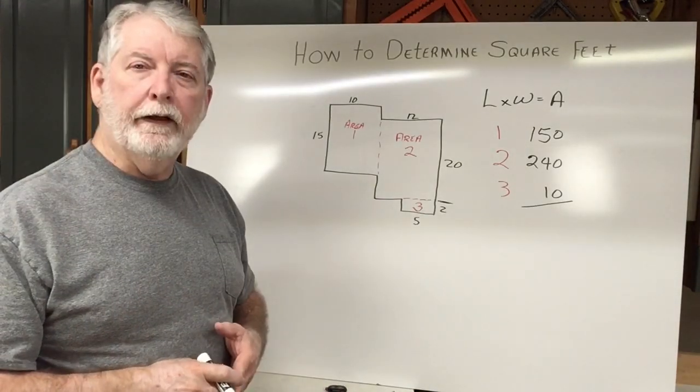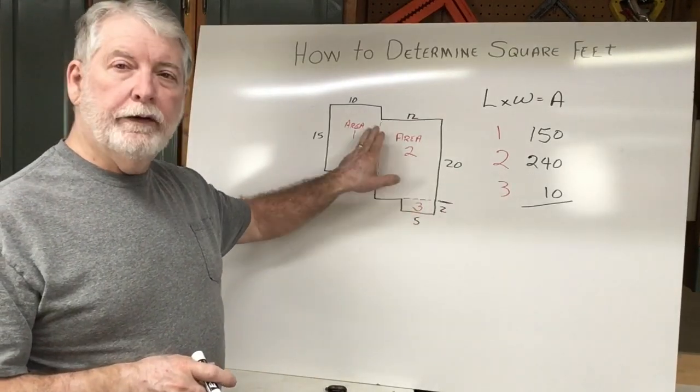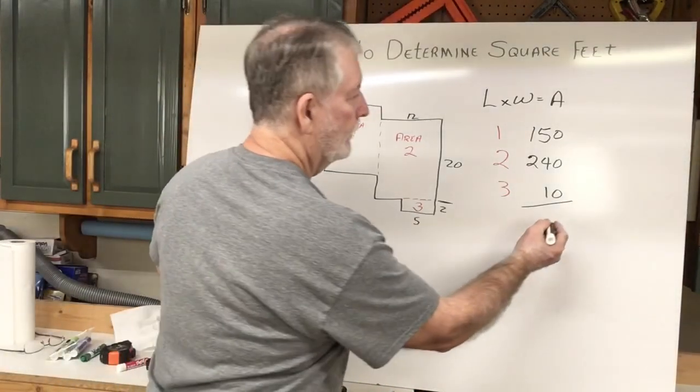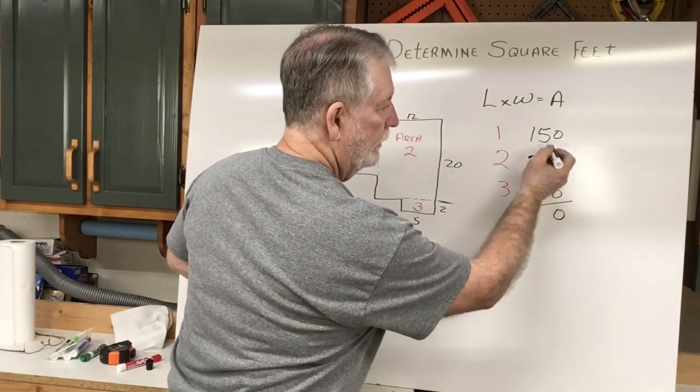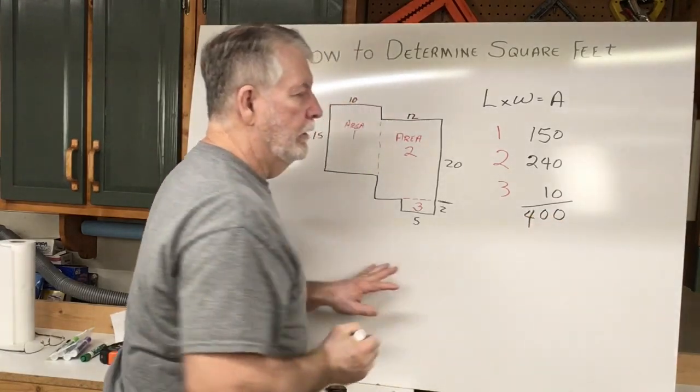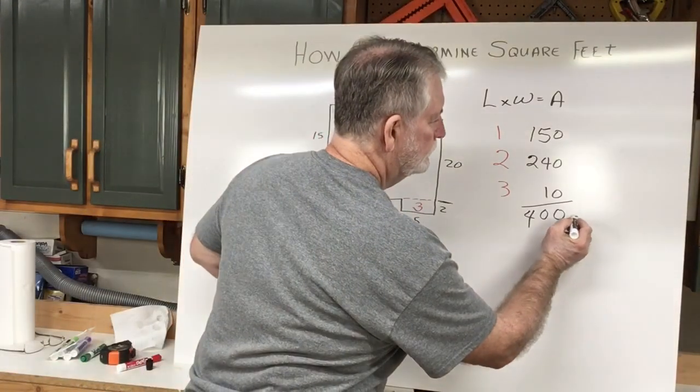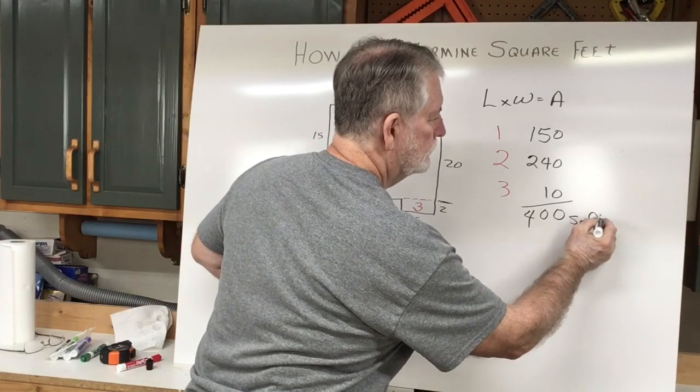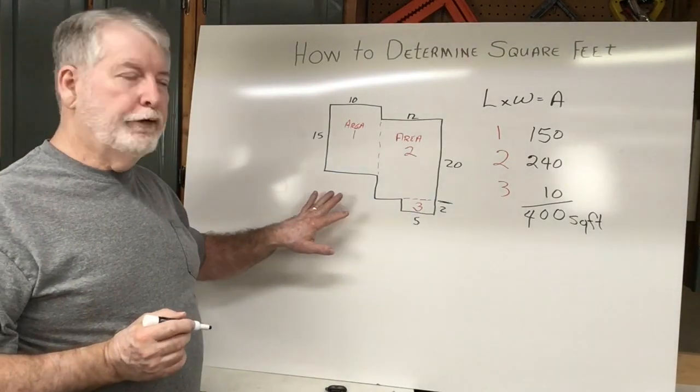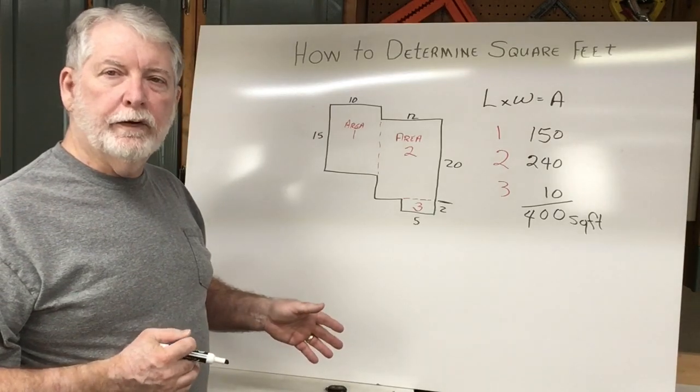So with all three rectangles now calculated as far as the square feet in each one of these sections, all we need to do now is add it up. So that's going to be 400 square feet. So any space that you have you can just break it down into the smaller rectangles and calculate the square footage.